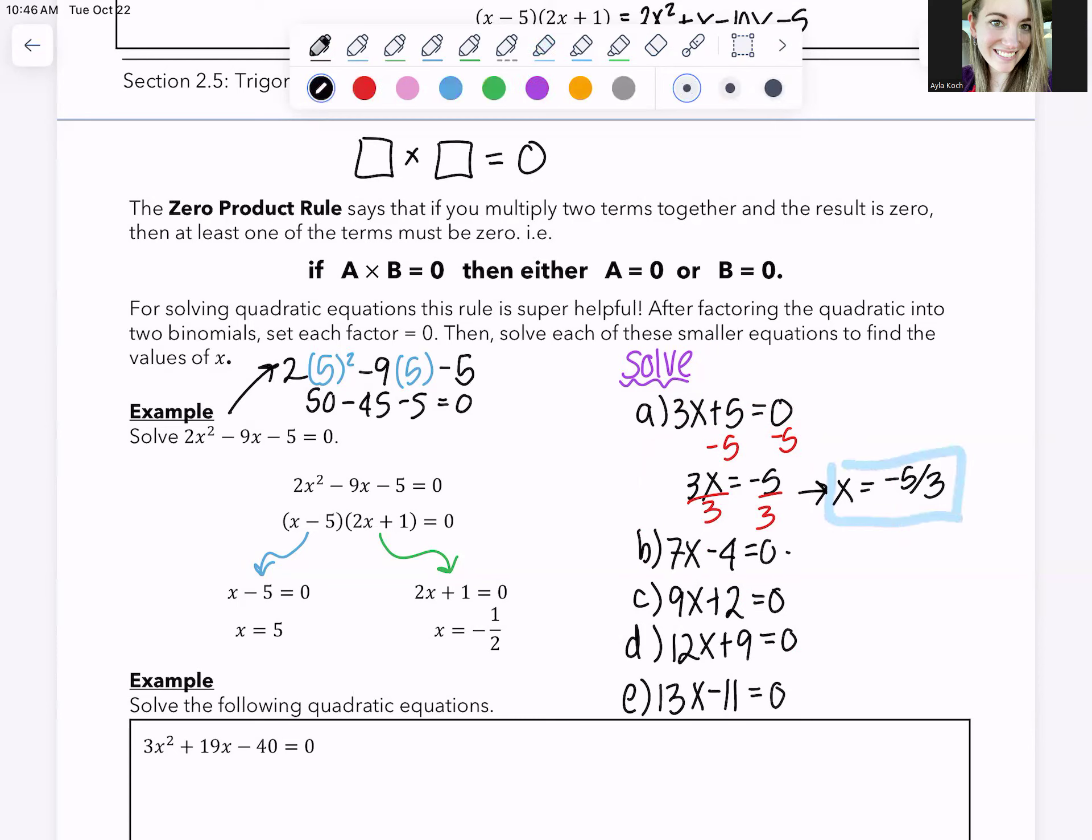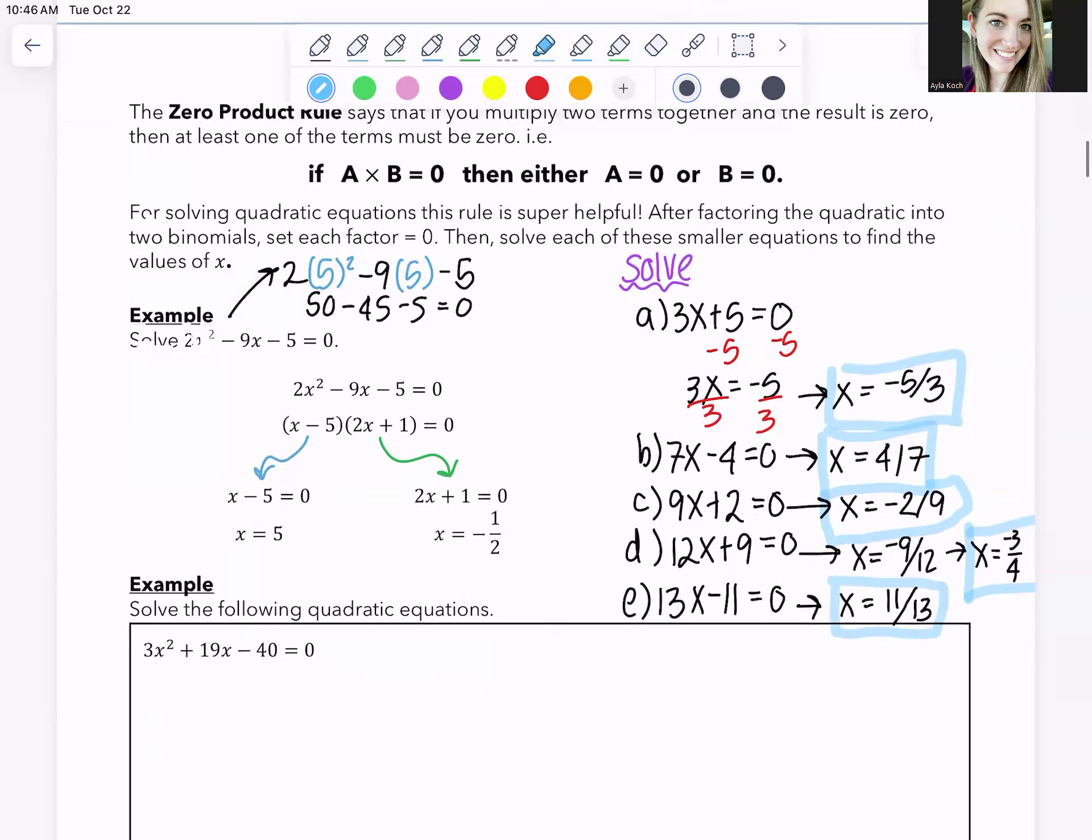Let's do it. So this guy over here would become x is equal to 4 over 7. This one, x is equal to negative 2 divided by 9. Here, x is equal to negative 9 divided by 12. But that can be simplified a little further. So that becomes negative 3 divided by 4. And over here, x is equal to 11 divided by 13. And those are those solutions. Boom, boom, boom. Some really messy highlighting here. Excellent. Okay.